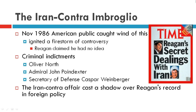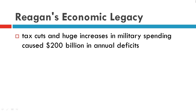Reagan claimed he had no idea of the illicit activities, and there were criminal indictments brought against Oliver North, Admiral John Poindexter, and Secretary of Defense Casper Weinberger. This Iran-Contra affair cast a shadow over Reagan's record of foreign policy.